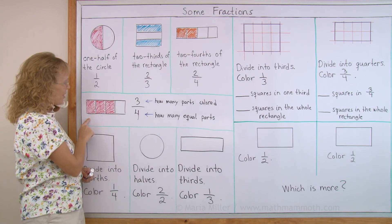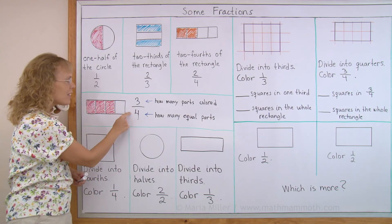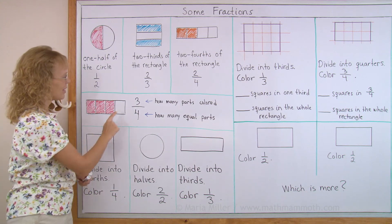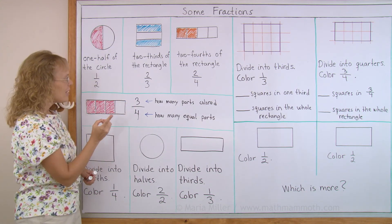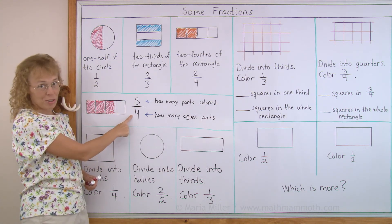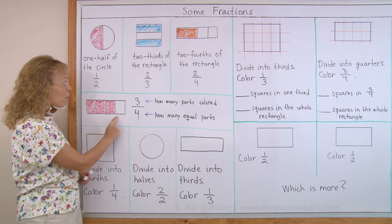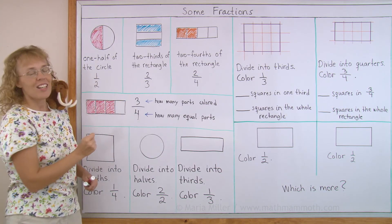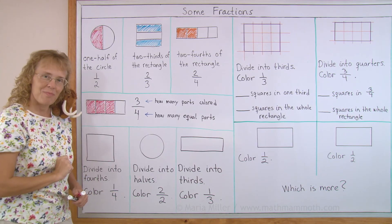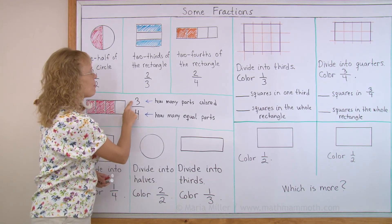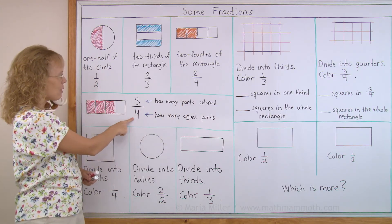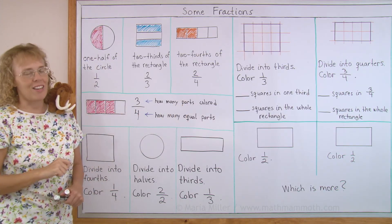One more over here. Can you read this fraction? We read it as three fourths. There's four parts in total, four equal parts, and three are colored, three fourths. So the top number tells you always how many parts are colored, and this number tells you how many equal parts there are.